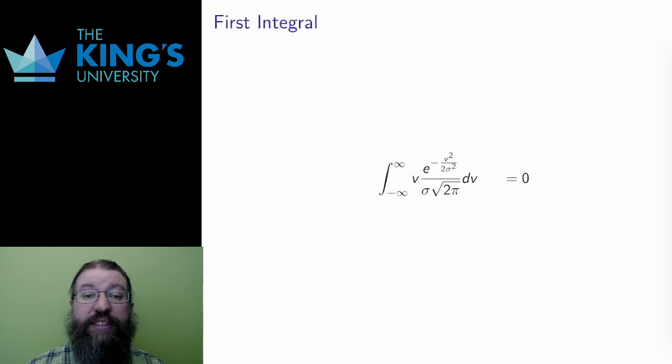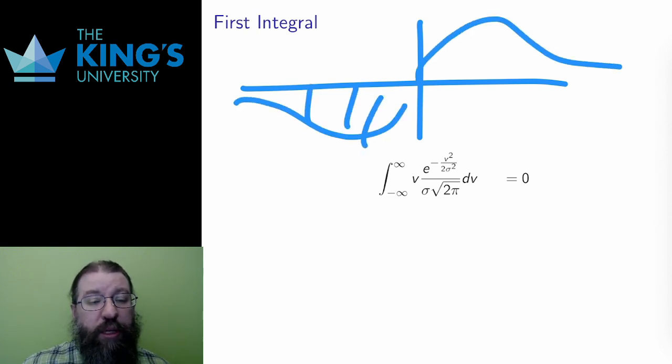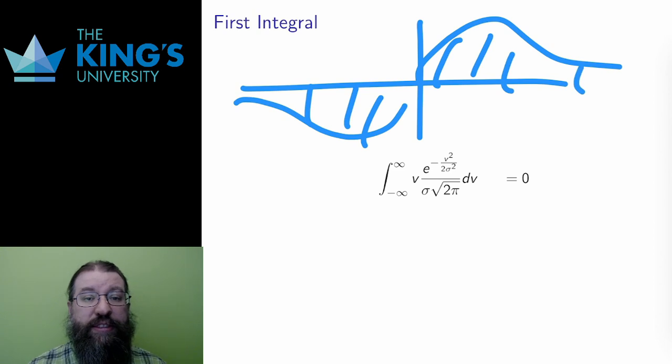The first integral is an odd function over all real numbers. Therefore, the positive and negative pieces will have the same area, but one will be above and one will be below the axis. They will cancel out. And by symmetry, I can argue that this integral must be 0.